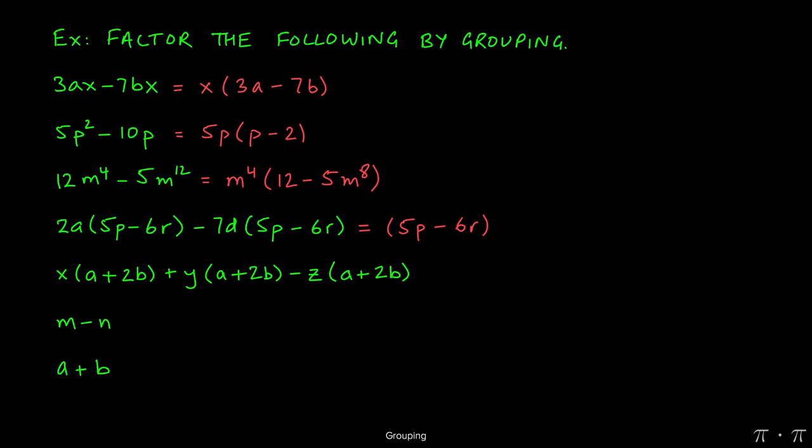How do we know what goes inside? Well, what happens if I divide this big term by 5p minus 6r? The 5p minus 6r will cancel with the one I'm dividing by, leaving behind just 2a. So when I open parentheses, I write 2a in front of it.